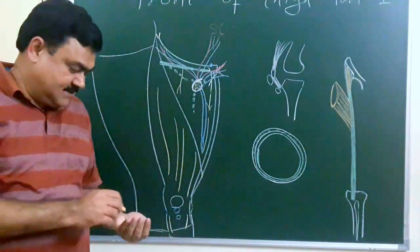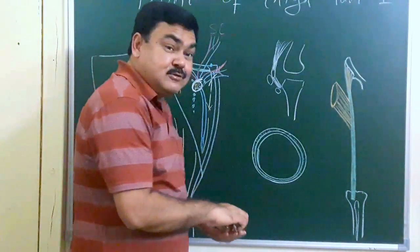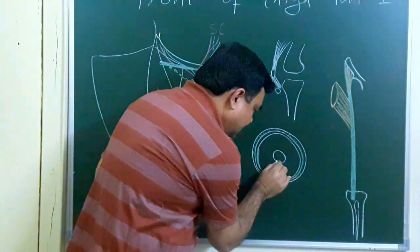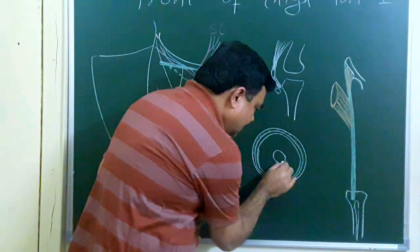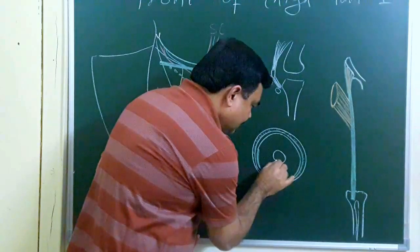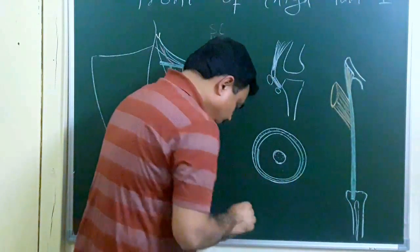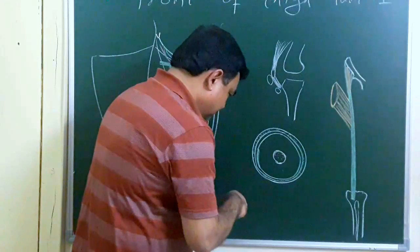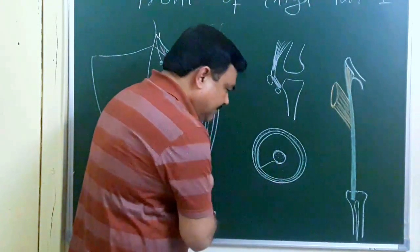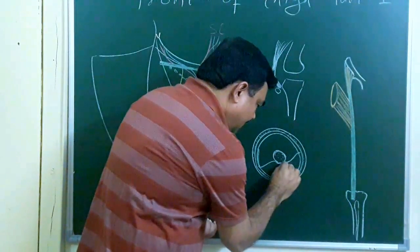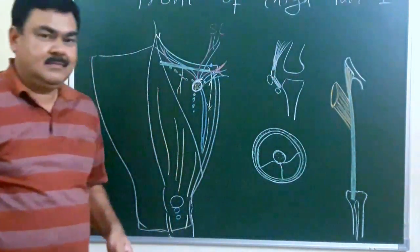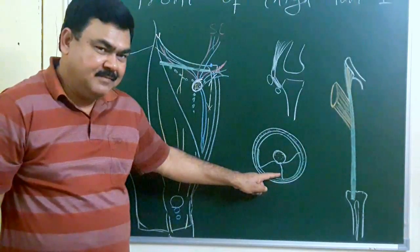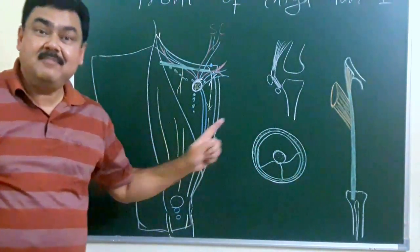Another modification is that the deep fascia forms intermuscular septa. Here is the femur, and the deep fascia forms the lateral intramuscular septum, medial intramuscular septum, and posterior intramuscular septum. These septa are modifications of the deep fascia and are formed by the deep fascia.